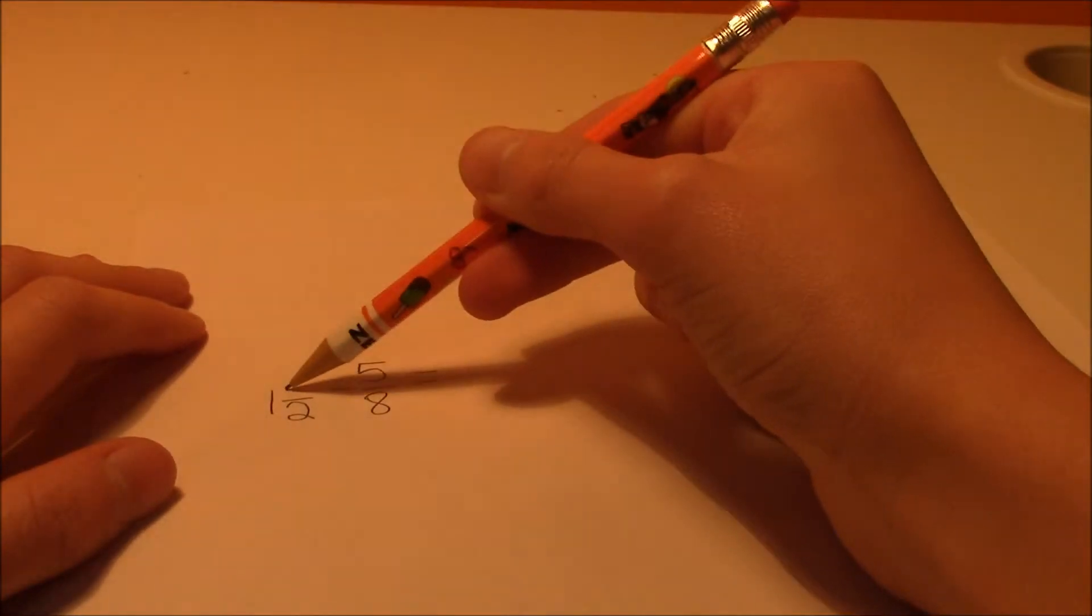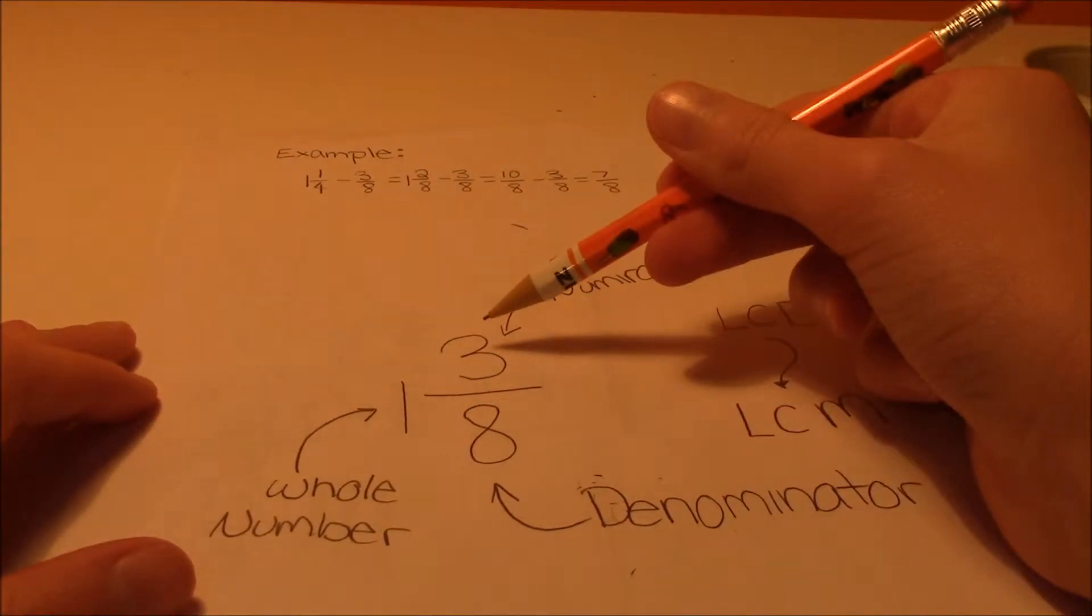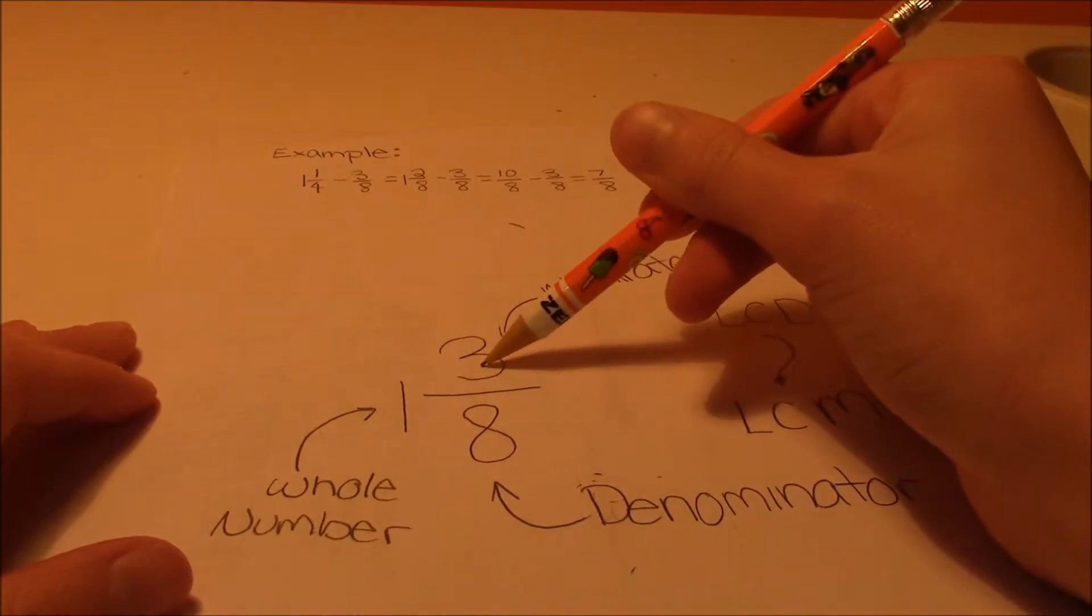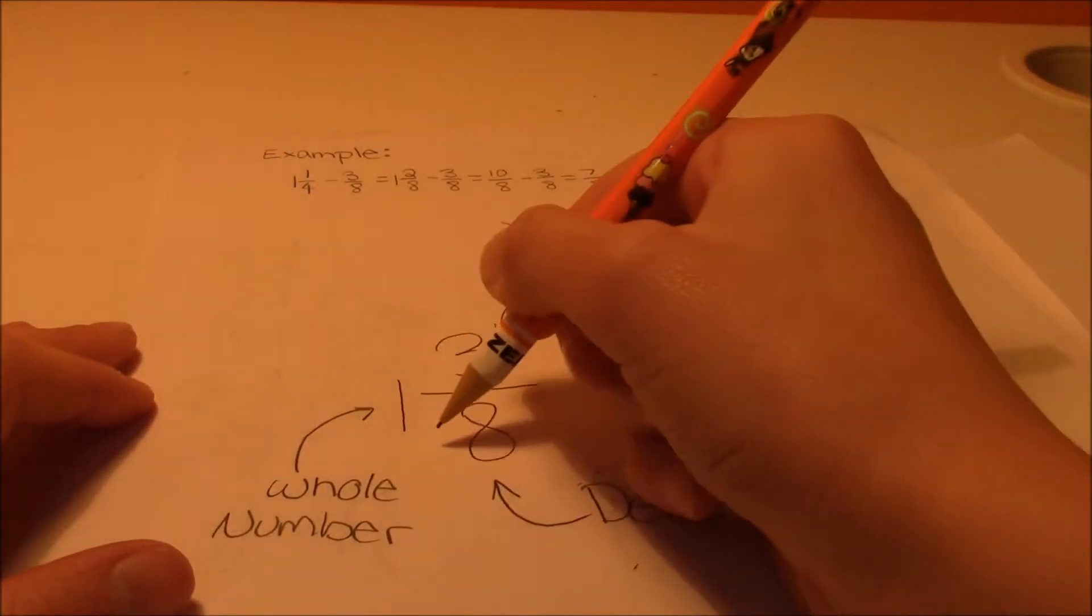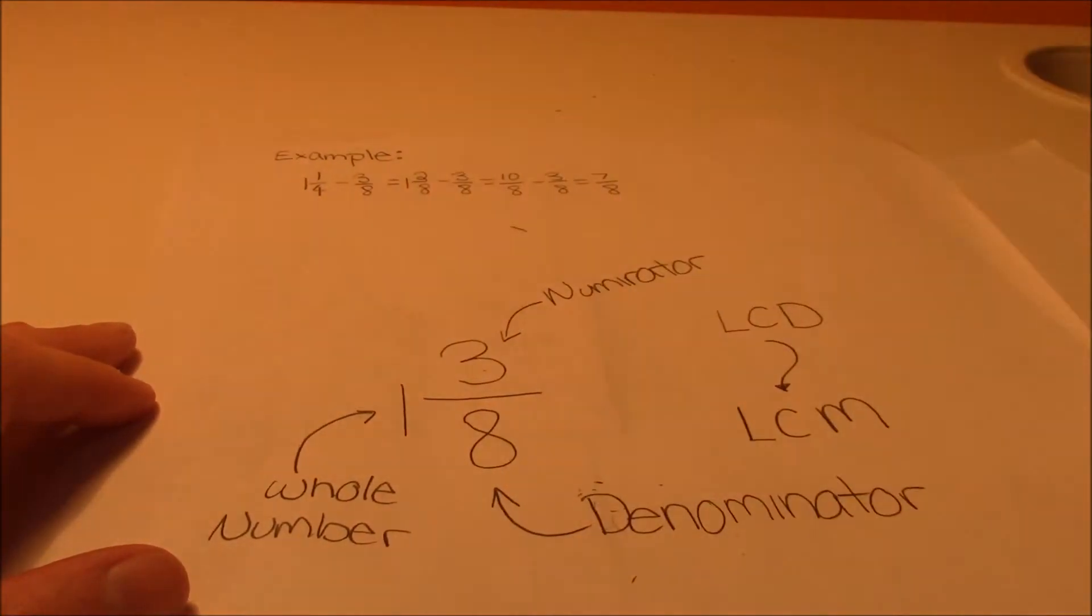so first thing you want to do is find what these two denominators have in common. And if you don't know what that is, this is the denominator, it is the number below, and the numerator is the one above. And if you see one number right next to the fraction, that means it's a whole number.